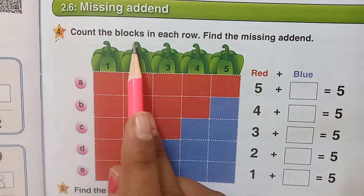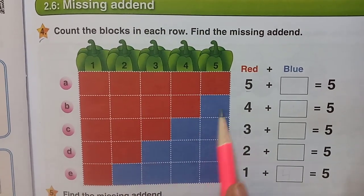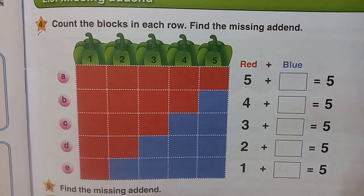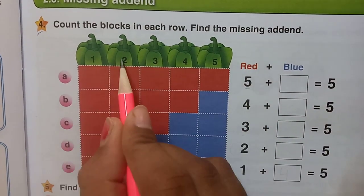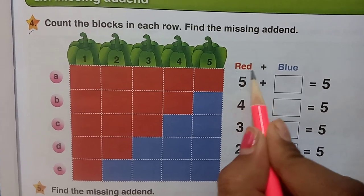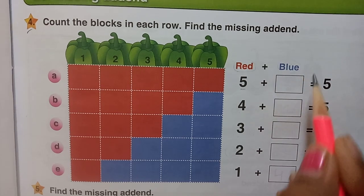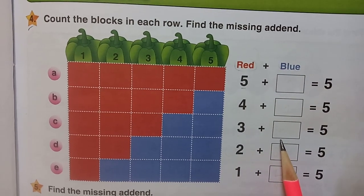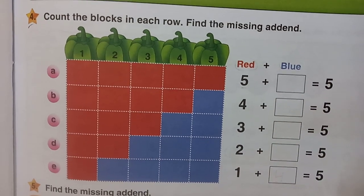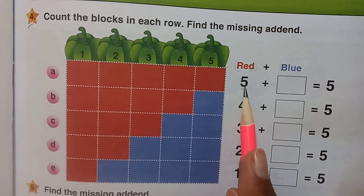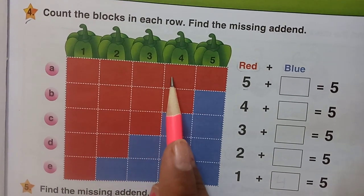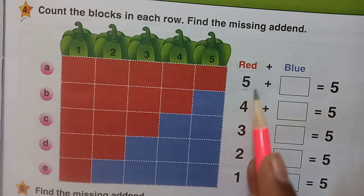Count the blocks in each row — rows are nothing but these lines. Find the missing addend. Here we are having 5 capsicums, some in red and blue. We have to count the number of blocks and write the missing addend. How many red blocks are there? Count: 1, 2, 3, 4, 5. There are 5 red blocks.